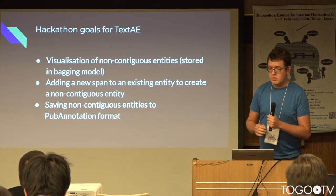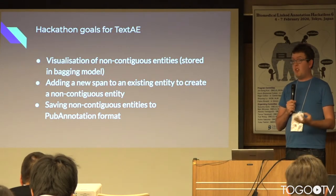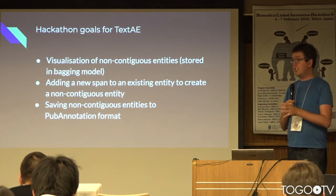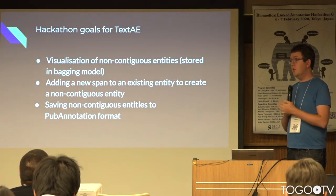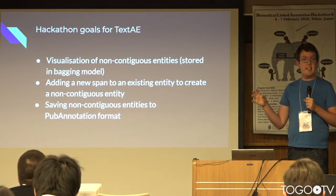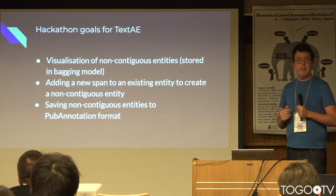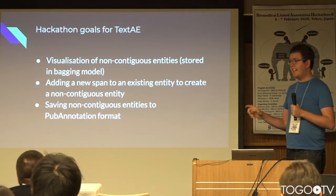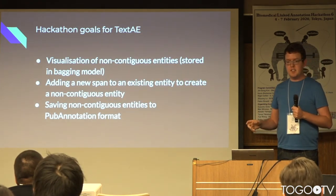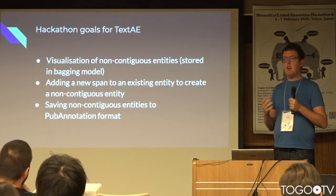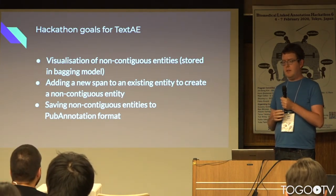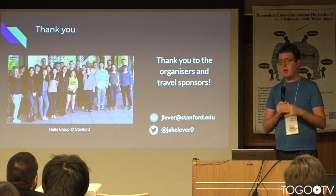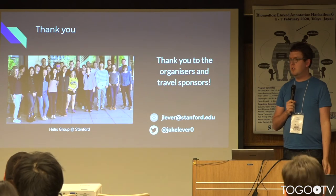The idea is: can we implement the more elegant way of doing it in TextAE, which aligns with the actual supported pub annotation format? The hackathon goals are: first, can we get TextAE to visualize non-contiguous entities — just give it a sentence and have it show them nicely. If that's doable, can we add functionality so you can start adding your own entities, add a new span to an entity, and then save all of this back to the original file format. Thank you very much, and thank you to the travel sponsors and organizers.